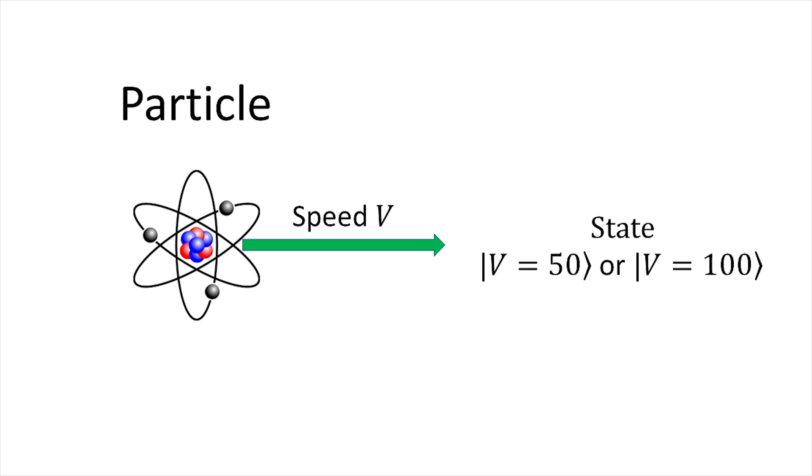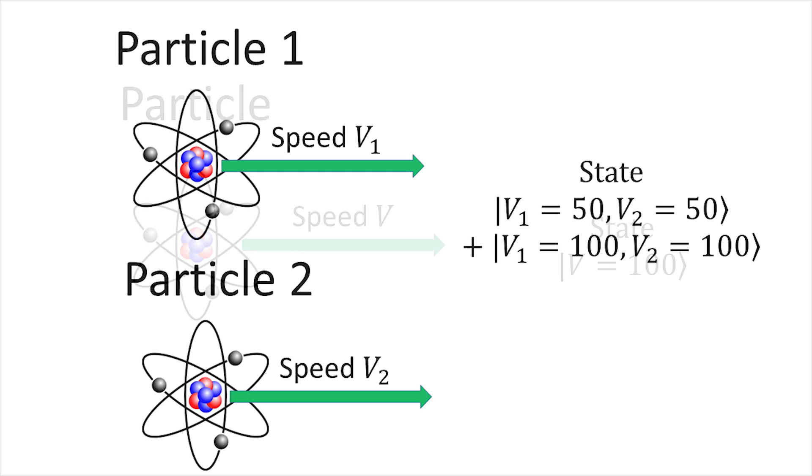In the quantum world, this particle could also be in the state 50 plus 100. This is called quantum superposition. But what does it mean? What happens if we measure the speed of such a particle? Well, we would find either 50 or 100 randomly. But after that, if let's say we measured 100, we would be certain that if we measure again, we would find 100.